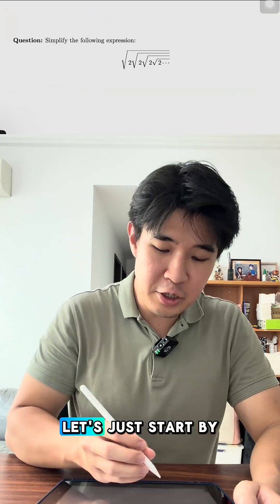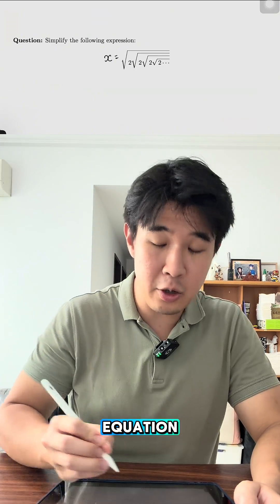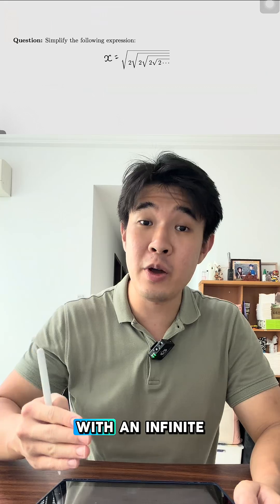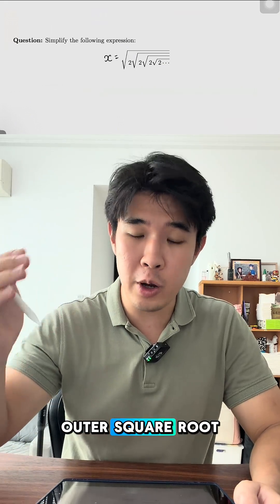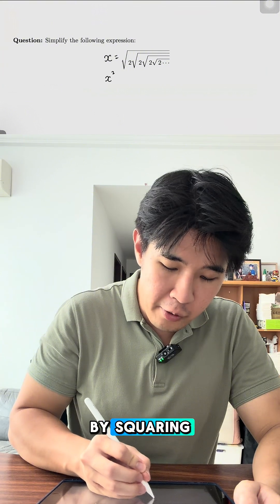Here's what you're supposed to do. Let's just start by making this as an equation and since we're dealing with an infinite amount of square roots, let's just start by taking out the outer square root. We can do that by squaring both sides.